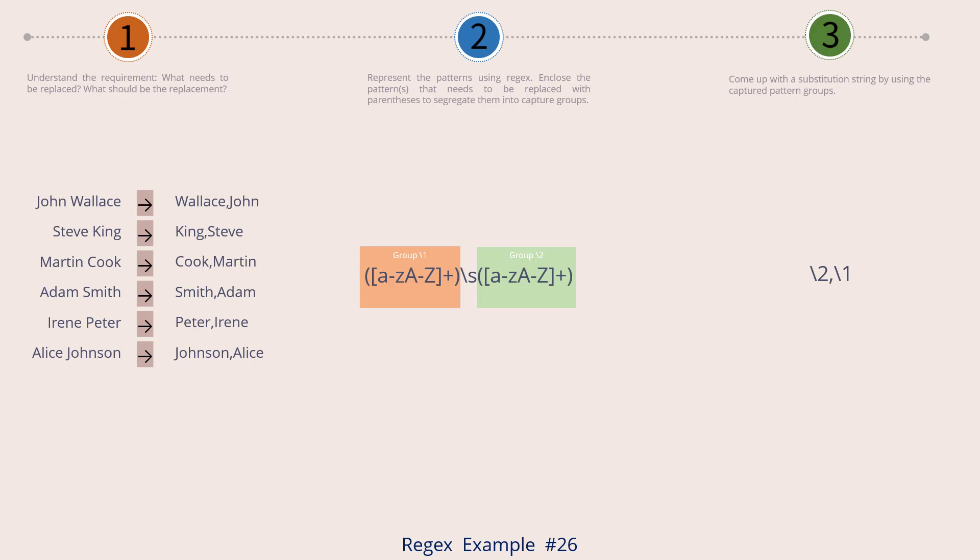So when the replacement engine sees backslash 2, it will go back and see what the capture group number 2 was. It will take the contents of capture group number 2, which was the last name, and put it in the position of backslash 2. Similarly, the backslash 1 is replaced with the contents of the first capture group, which is the first name.